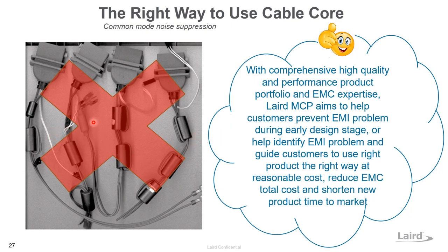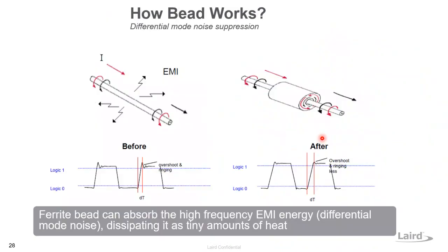Stacking up whatever cable core is on hand is actually a good way to troubleshoot at the beginning — to understand how effective the ferrite core solution is. The ferrite bead works to suppress differential mode noise very simply: it is installed on one wire and blocks very high-frequency noise. The clock signal passes through clean, but the high-frequency noise is blocked and absorbed by the ferrite bead. The ferrite bead absorbs high-frequency EMI energy and dissipates it as a very tiny amount of heat.